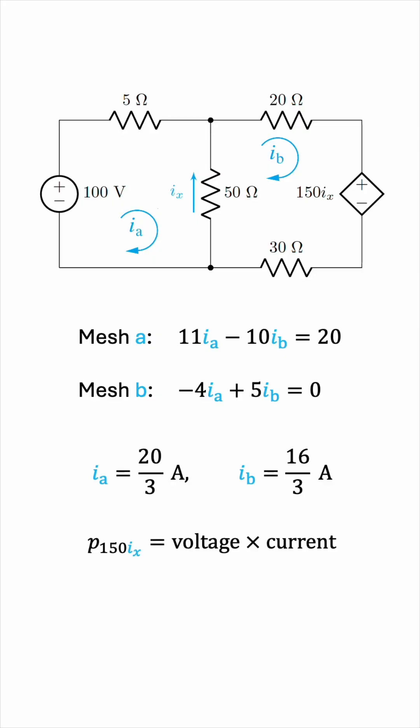This will give us the power delivered by this 150Ix dependent source. What is the voltage? It's rating, 150Ix. What is the current? It's Ib. And we don't need to attach a negative sign here, because Ib is entering the positive terminal of the dependent source.